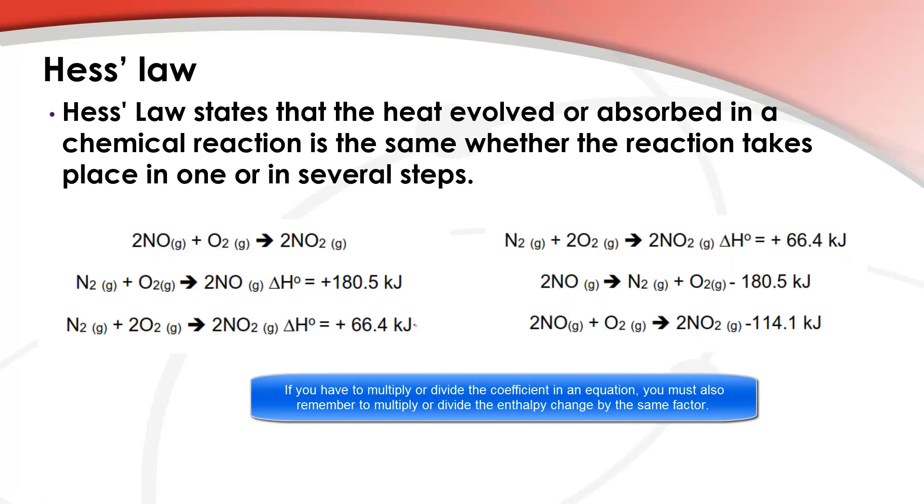So what I've done, I've put this equation at the top there and we won't have to worry about this equation at all. Now this middle equation, what I've done to this equation is I've reversed it. So you can see we now have 2NO arrow and that's going to make nitrogen gas and oxygen gas. So because I've reversed this equation, I've also reversed the enthalpy change. It was positive 180.5 kilojoules, it's now negative 180.5 kilojoules.